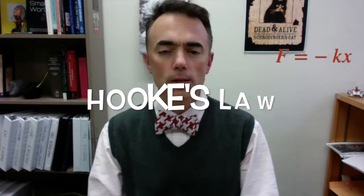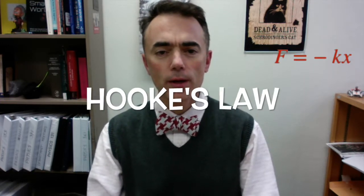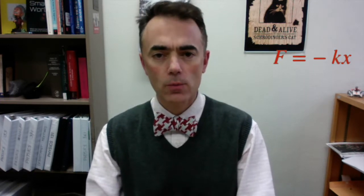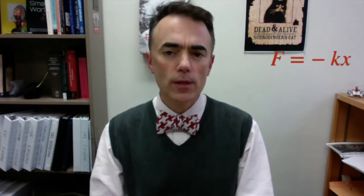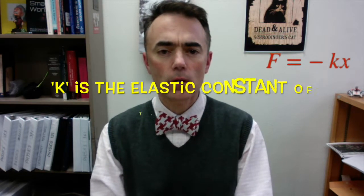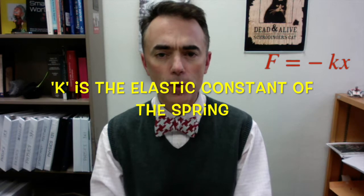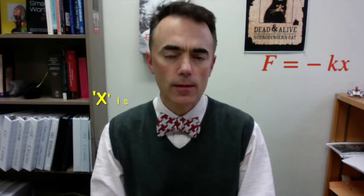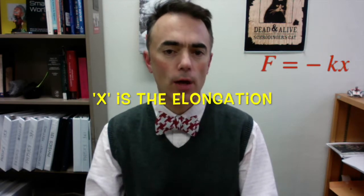The mathematical expression to represent this is known as Hooke's law, which tells us that the force is equal to negative kx, where F is the force exerted by the spring, k is a characteristic constant of the spring — the elastic constant — and x is the elongation, which is the distance stretched by the spring.